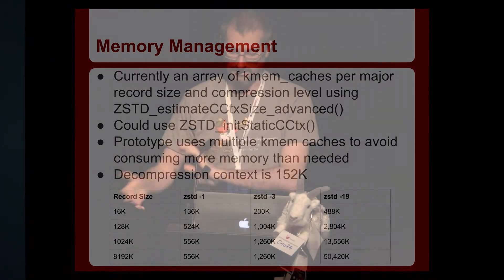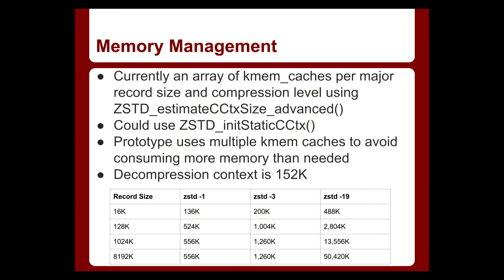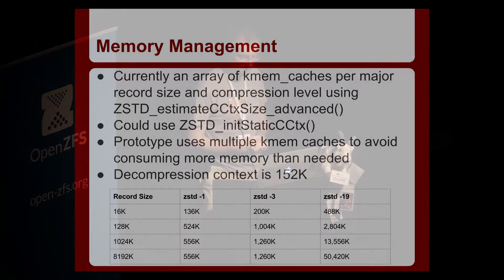We don't actually want to put all 22 levels in the on-disk format enum anyway. A decompression context with ZStandard is 150 kilobytes. Compression varies: with a 16K record at the minimum compression level, the context is 136K, and if you use 8 meg blocks with dash-19, you can get up to a 50 meg context to compress. It usually won't use that amount of memory, but that's the worst case scenario. So we have an array of compression levels and record sizes, and we use a function in ZStandard that estimates the context size to create the KMEM caches.